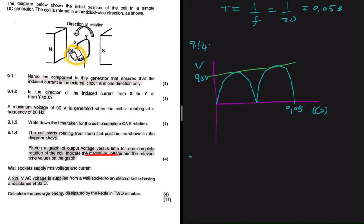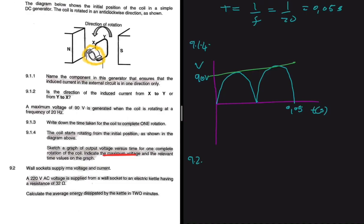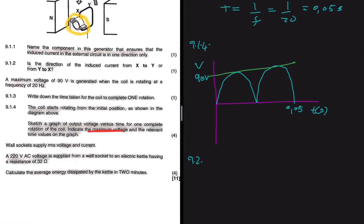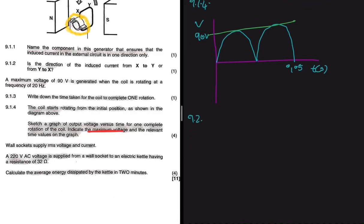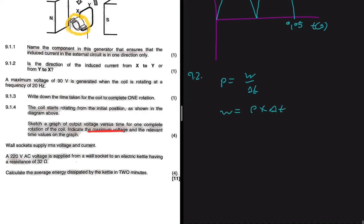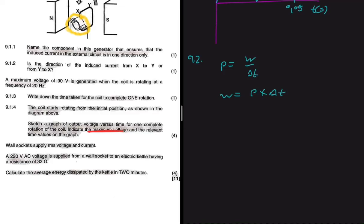And then 9.2, the last question. The wall sockets supply RMS voltage and current. A 220 volts AC voltage is applied from your wall socket to an electrical kettle having a resistance of 32 ohms. Let's calculate the average energy dissipated by the kettle in two minutes. So we have the power being equals to the work divided by the time. If you want to find the energy dissipated, the work equals to the power multiplied by the time.